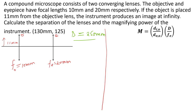We are still in optics — this is Example 2 dealing with compound microscopes. A compound microscope consists of two converging lenses. The objective and eyepiece have focal lengths of 10 mm and 20 mm respectively. If the object is placed 11 mm from the objective lens and the instrument produces an image at infinity, calculate the separation of the lenses and the magnifying power of the instrument.